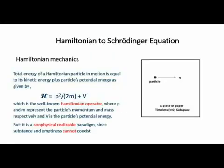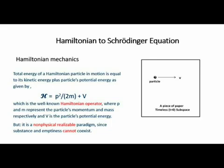This slide shows the derivation of Schrödinger's equation from Hamiltonian classical mechanics, from which we see that a particle in motion is situated on an empty space of a piece of paper as shown in the diagram. Total energy of a Hamiltonian particle in motion is equal to its kinetic energy plus the particle's potential energy: H = p²/2m + V, which is the well-known Hamiltonian operator, where p and m represent the particle's momentum and mass respectively, and V is the particle's potential energy. Nevertheless, it is a non-physically realizable paradigm, since substance and emptiness cannot coexist.